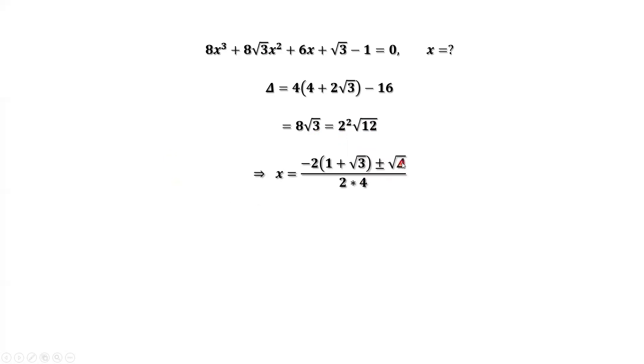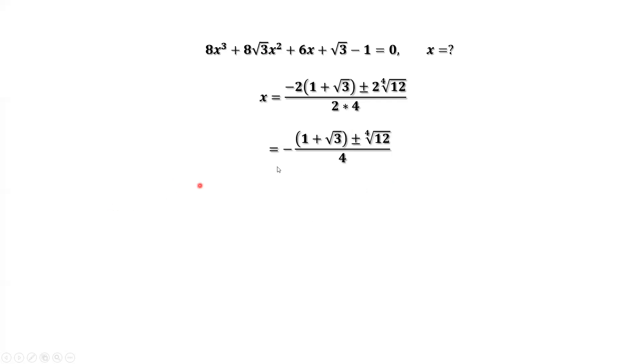Plug in delta here. Continue to simplify. We have negative 1 plus square root of 3 plus minus the fourth root of 12 divided by 4. Here, 2 cancel.